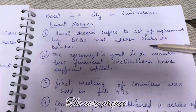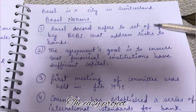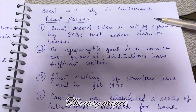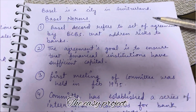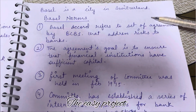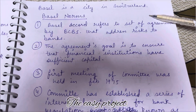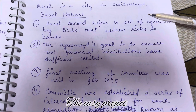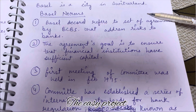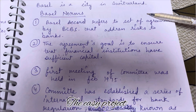The Basel Committee has three guidelines which we read in Basel 1, Basel 2, and Basel 3. Basel is nothing new, it is just a city in Switzerland, and it has been formed in its name.